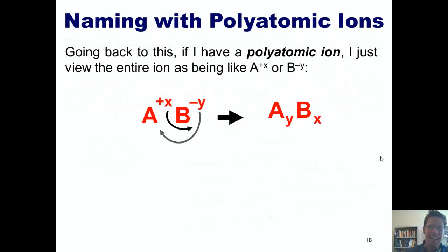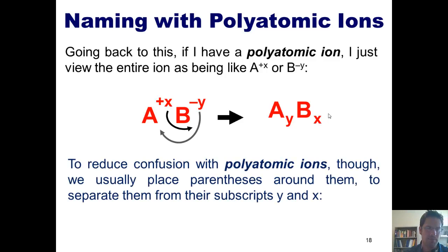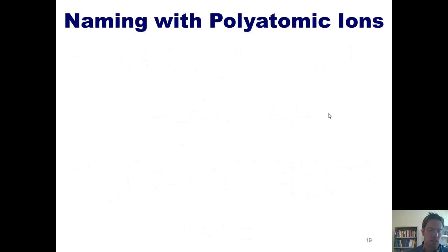If I have a polyatomic ion, I just view the entire ion as being like an A plus X or a B minus Y. You remember us doing this before with our earlier ionic examples. We do the exact same thing, except we substitute A or B with the entire formula of whatever the polyatomic ion is. To reduce confusion with polyatomic ions, we usually place parentheses around them to separate them from their subscripts, Y and X.